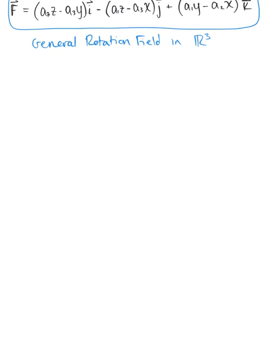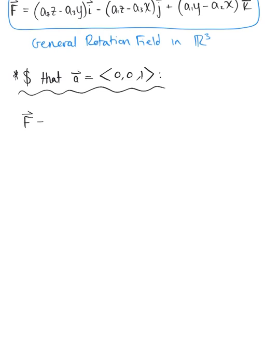Let's suppose that vector a is a unit vector pointing in the z-direction, so it has components (0, 0, 1). How is this going to affect our general rotation field? We know vector f is defined by the cross product of vector a and vector r, so again we put that into our 3×3 matrix and take the determinant.